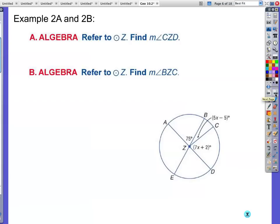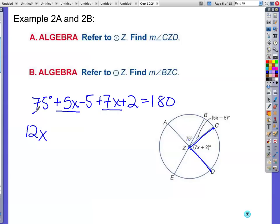Example 2A and 2B. Refer to circle Z. Find the measure of angle C, Z, D. Okay? What information do I have? Well, this goes right through the center, so it must be a diameter. So all three of these are going to add up to 180. So I have 75 degrees plus 5x - 5 plus 7x + 2 equals 180. Combine my terms. I've got a 12x. I've got a 75 minus 5, which is 70. And then 70 plus 2 is 72. And I said that you would have 180. So 12x equals 108. All right? And now I go ahead and divide 108 by 12. I'm getting x equals 9.